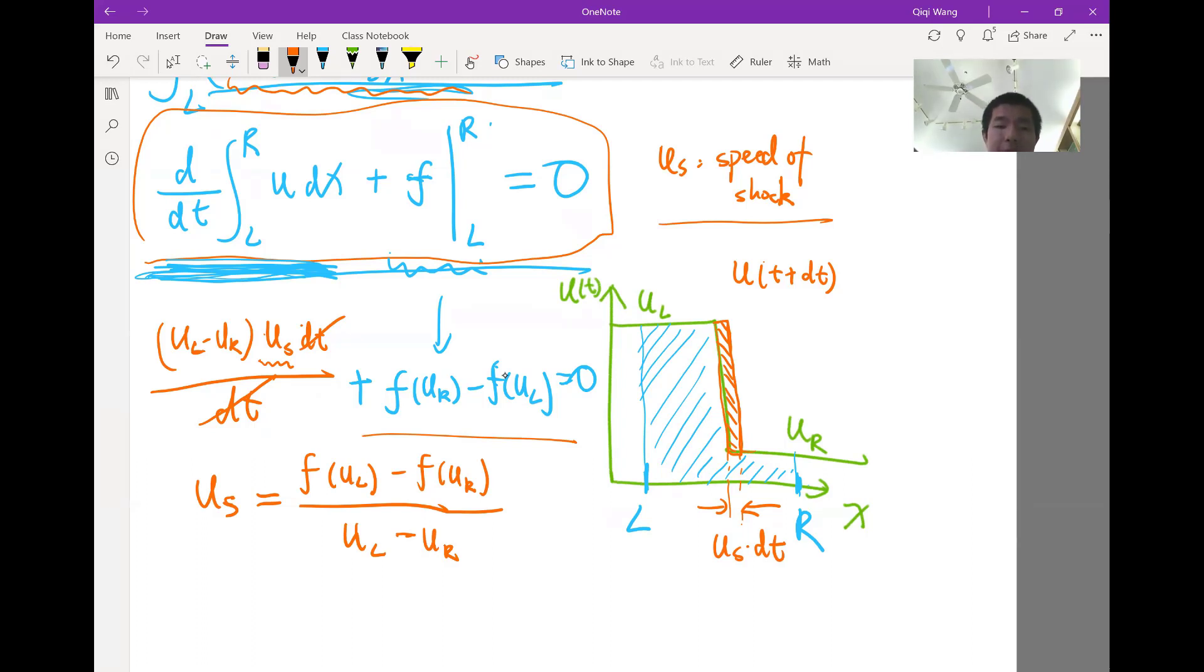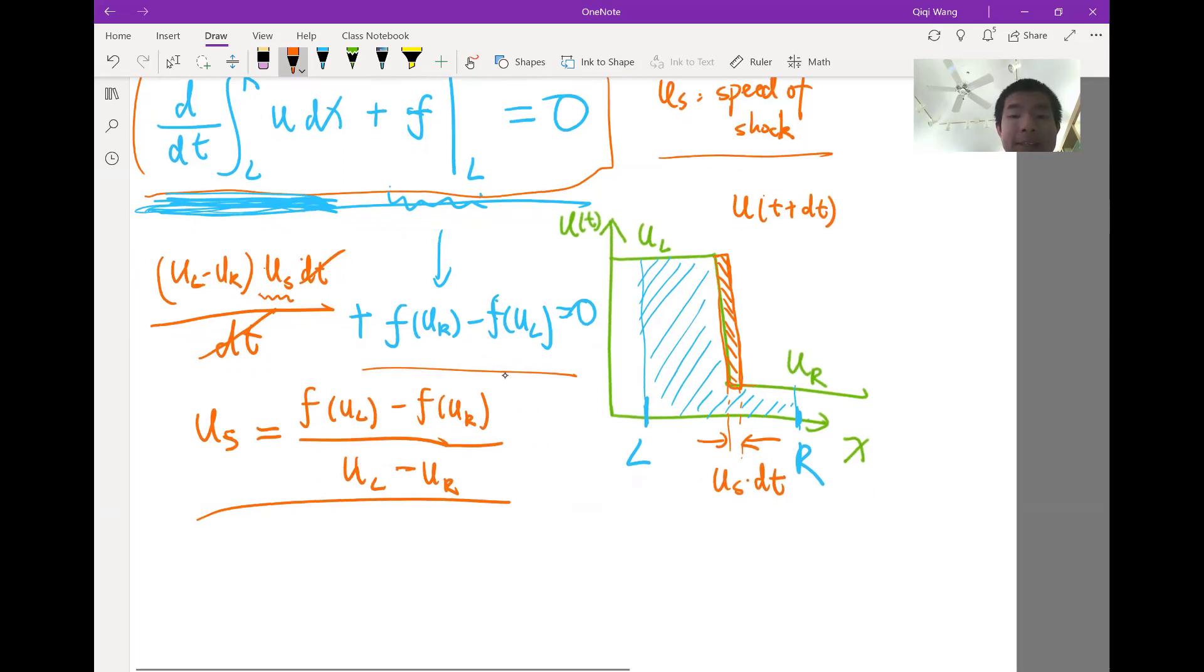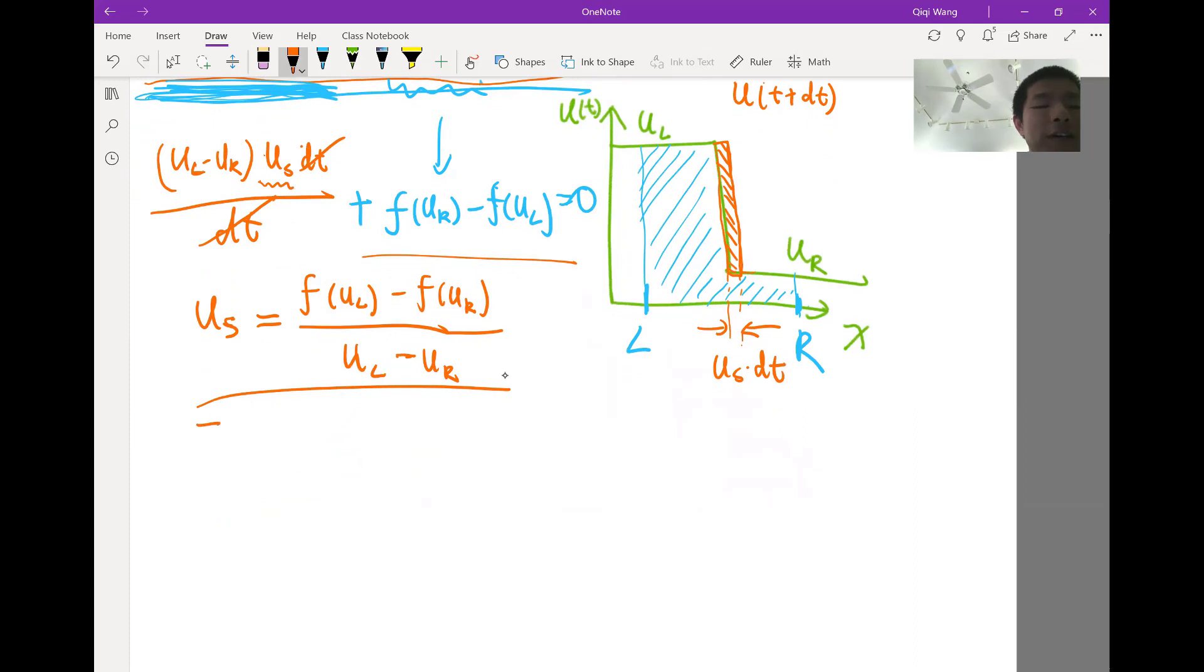So that's actually interesting, because there is actually a special case for the speed of the shockwave. The special case is when the shockwave is tiny. The shockwave is tiny, which means the difference between ul and ur is tiny. So for tiny shockwaves, that means the solution is almost continuous. Us is actually equal to df divided by du.